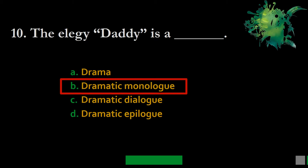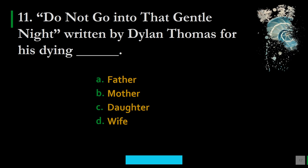Question 11: Do Not Go Gentle into That Good Night was written by Dylan Thomas for his dying — A. Father, B. Mother, C. Daughter, D. Wife. The correct answer is A — this particular elegy is written for his dying father. Here we find Dylan Thomas's emotions towards his father.